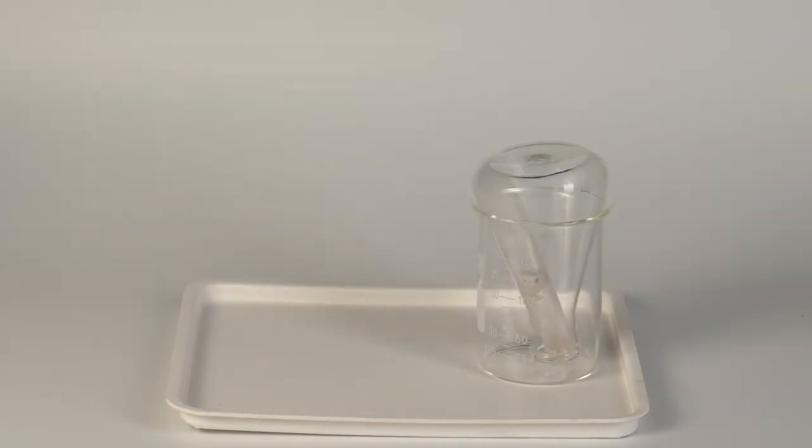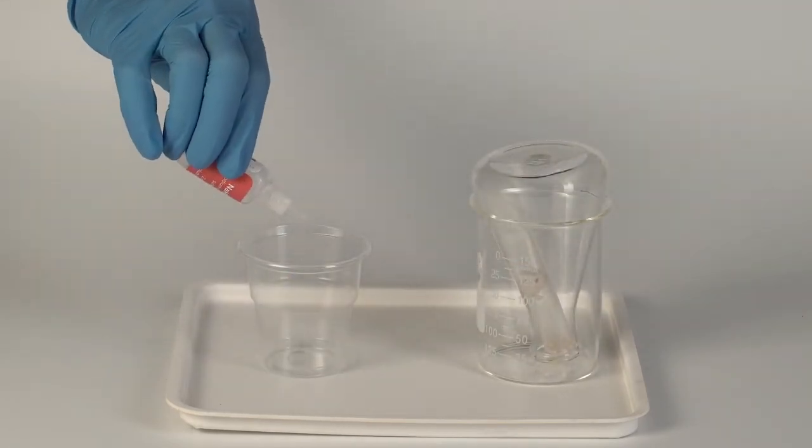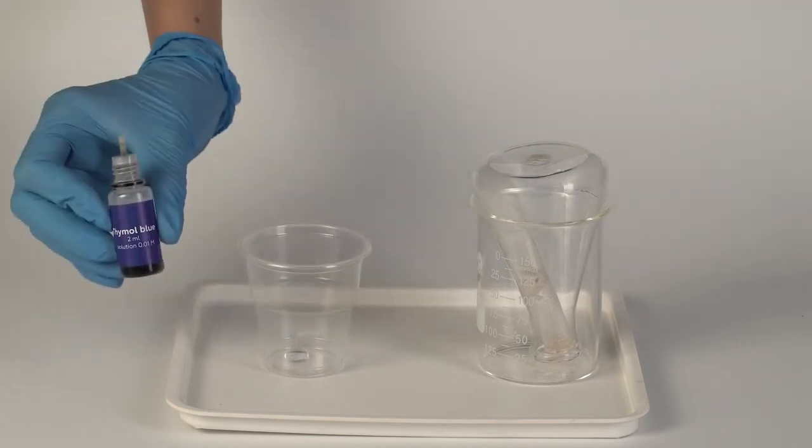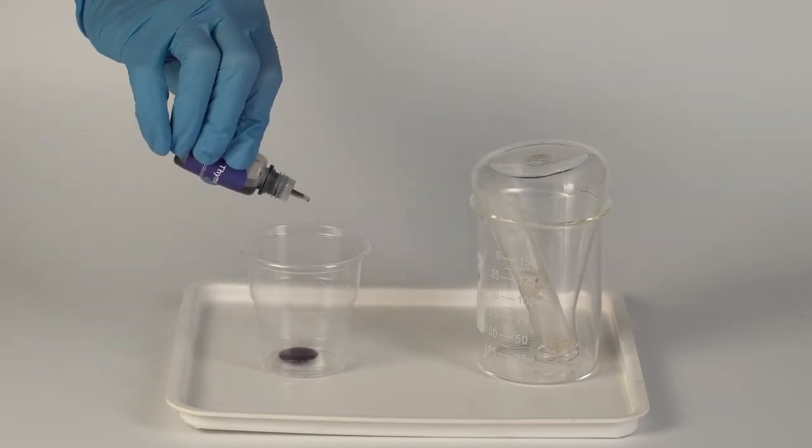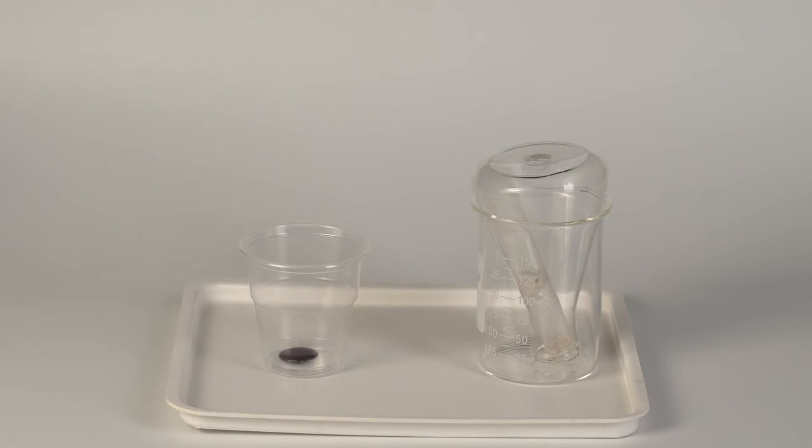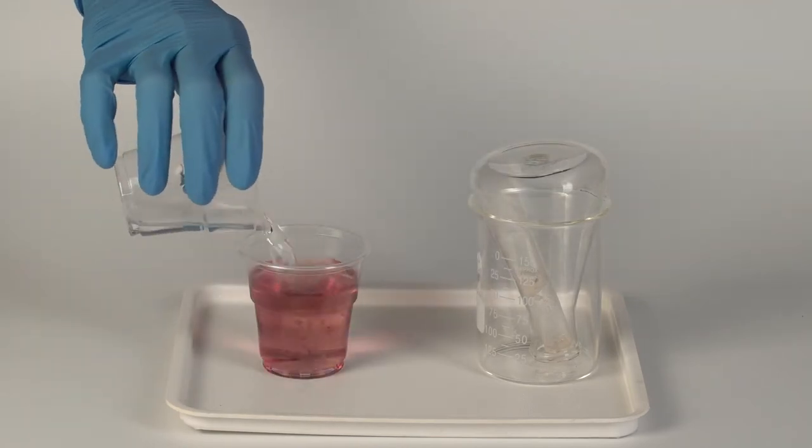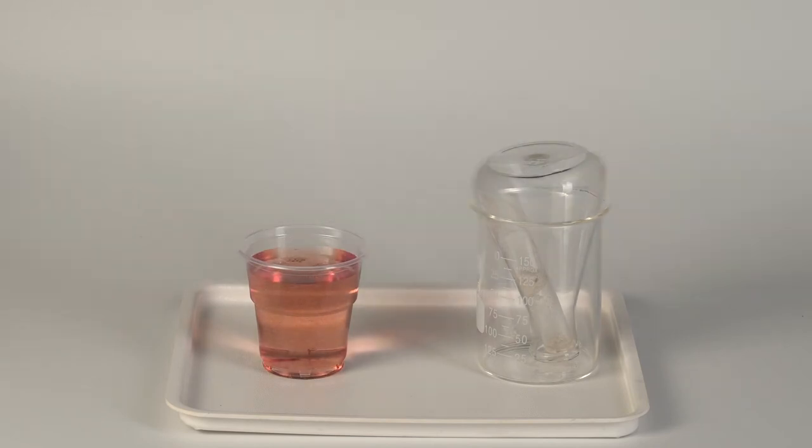Take a disposable cup and add 10 drops of sodium hydrogen sulfate solution to it, and then add 10 drops of thymol blue solution. Fill the cup to the top with tap water. The color of the solution is now orange, indicating that it is an acidic solution. Thymol blue is a pH indicator where orange indicates an acidic solution and blue a basic solution.